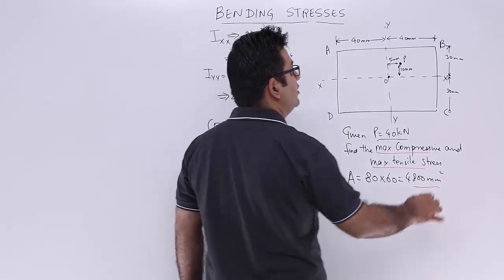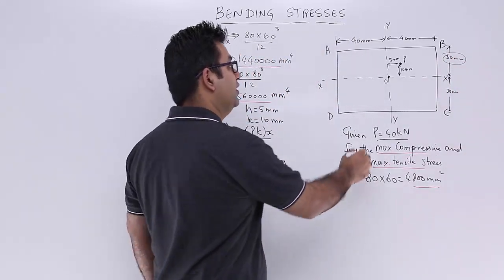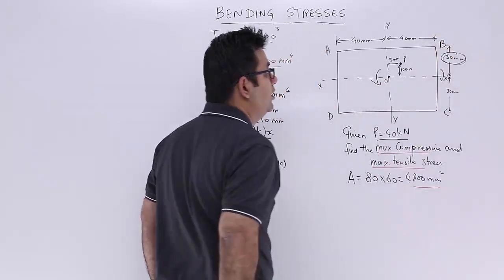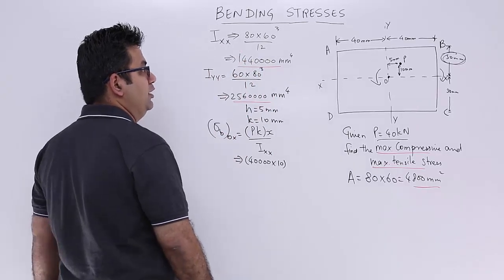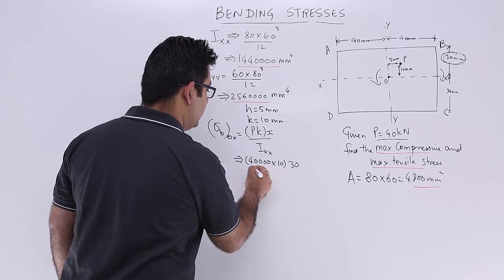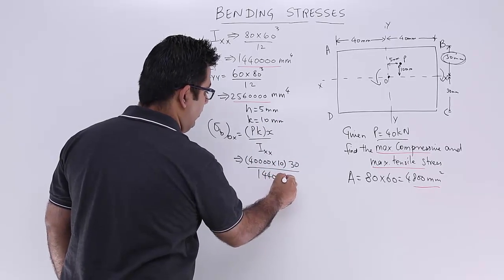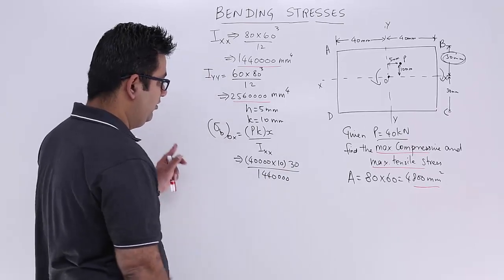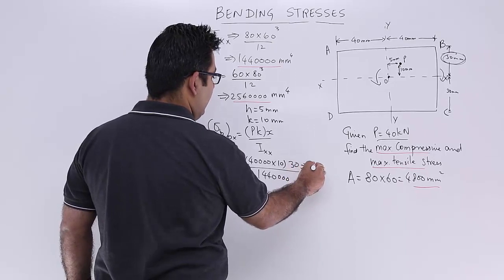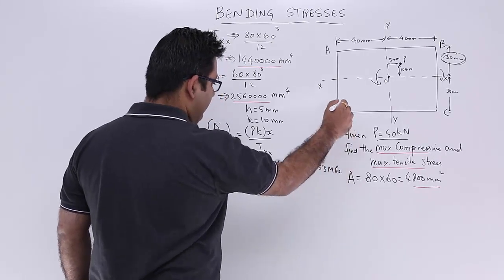X over here is 10. So bending is about this like this. So this would be the maximum distance from the neutral axis: 30. So you will have 30 as x upon I double x, which is 144 into 10 to the power 4. So when you calculate this thing, you get the value as 8.33 MPa.